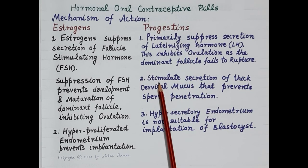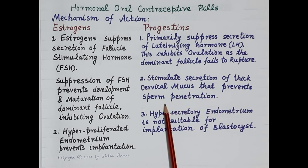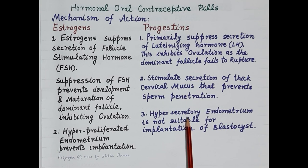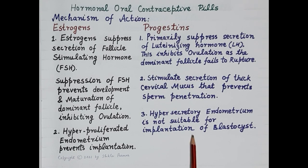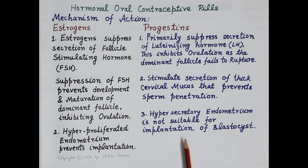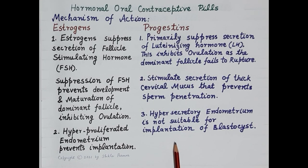Progesterone stimulates secretion of thick cervical mucus that prevents sperm penetration. Progesterone also makes the endometrium hypersecretory, and a hypersecretory endometrium is not suitable for implantation of the blastocyst. Together, estrogen and progesterone prevent ovulation, prevent implantation, and thereby prevent pregnancy.